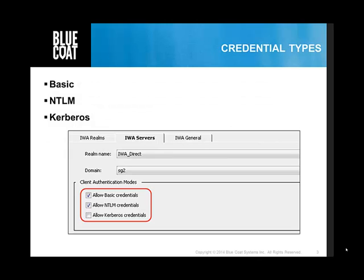Credential types. In a proxy SG deployment, when a client makes a request, the proxy SG responds by offering the client the available options for the credential type to be used. The client then chooses the credential type. The proxy SG offers three types of credentials for use with an IWA authentication realm: BASIC, NTLM, and Kerberos.